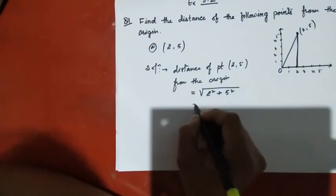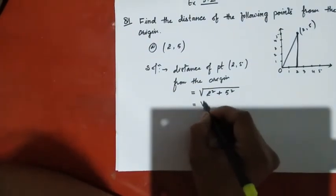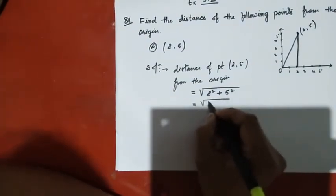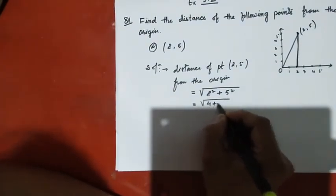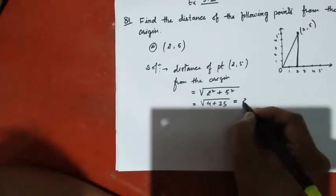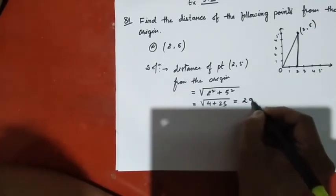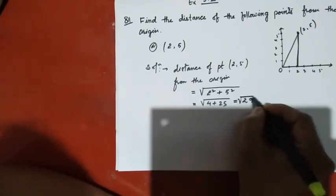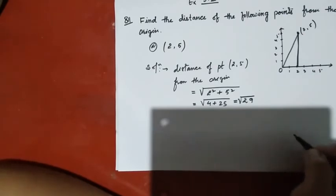We have 2 squared equals 4, 5 squared equals 25, and 4 plus 25 equals 29. So the distance is the square root of 29.